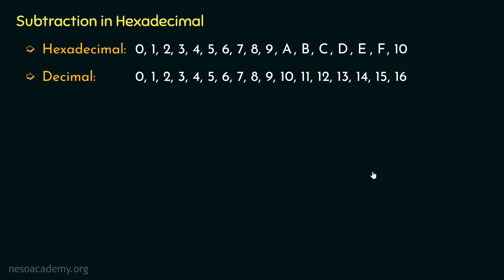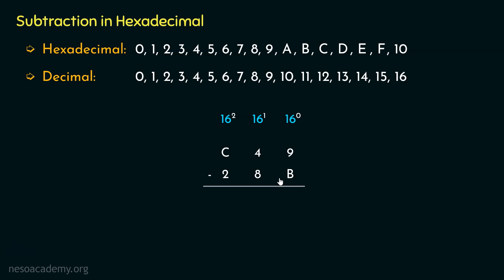Let's focus on the subtraction now. We are going to have the minuend as C49 and the subtrahend as 28B. Before we proceed, let's note the place values: 16 raised to the power 0 for the least significant digits, 16 raised to the power 1 for the middle digits, and 16 squared for the most significant digits. Let's now perform the subtraction.